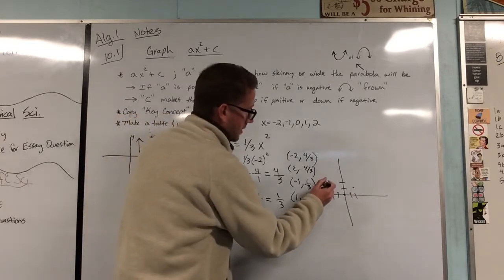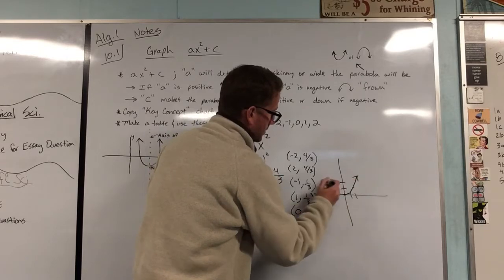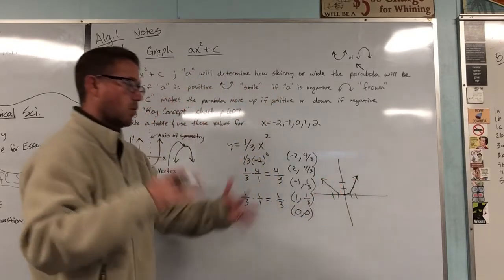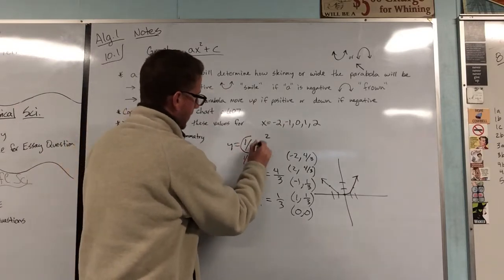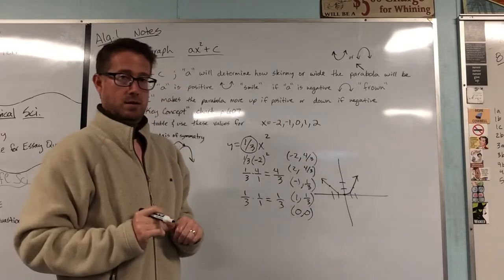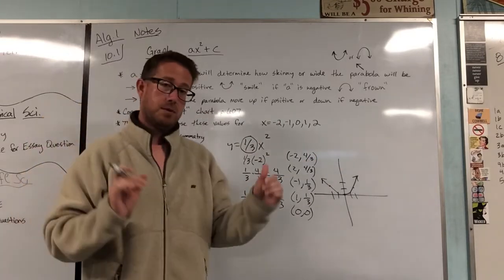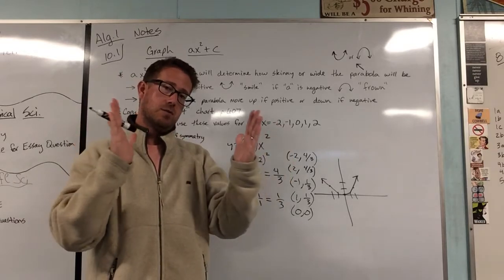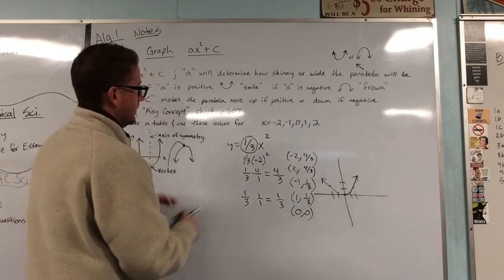And it's going to make a smiley face. And it's a wider smiley face. So what does that tell you? That when you have a fraction coefficient, you will make a wider parabola. When you have, like we did at the first problem, a whole number coefficient, it will make a slightly skinnier parabola.